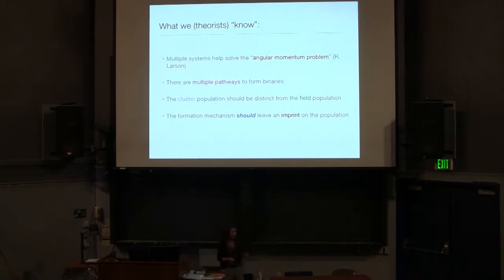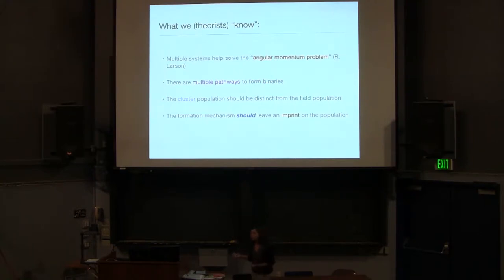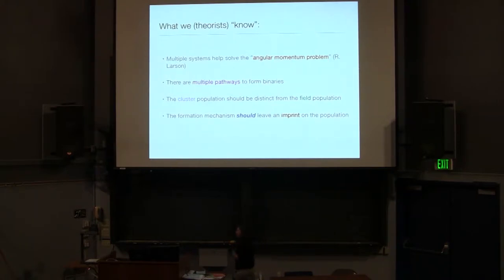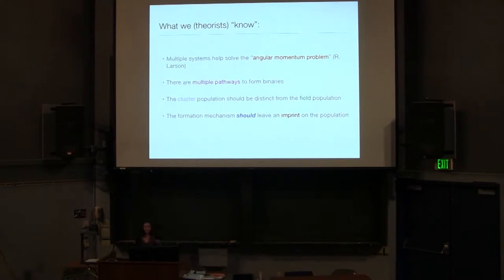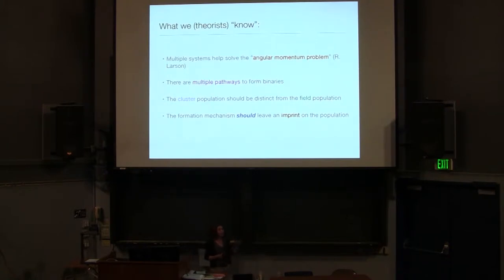One of the things we know about binaries is they help solve a long-standing problem in star formation known as the angular momentum problem. When we look at giant molecular clouds and the cores that are progenitors of stars, we find that they have a lot of angular momentum compared to how much is left in a single star. One of the ways we can use up some of this excess angular momentum is if stars are placed into binary systems, because if you put two masses far away and have them orbit one another, that takes up a lot of angular momentum. We also know there are probably multiple pathways to formation — binaries cover a broad range in mass ratios and span orbital periods from five days to 5,000 AU.